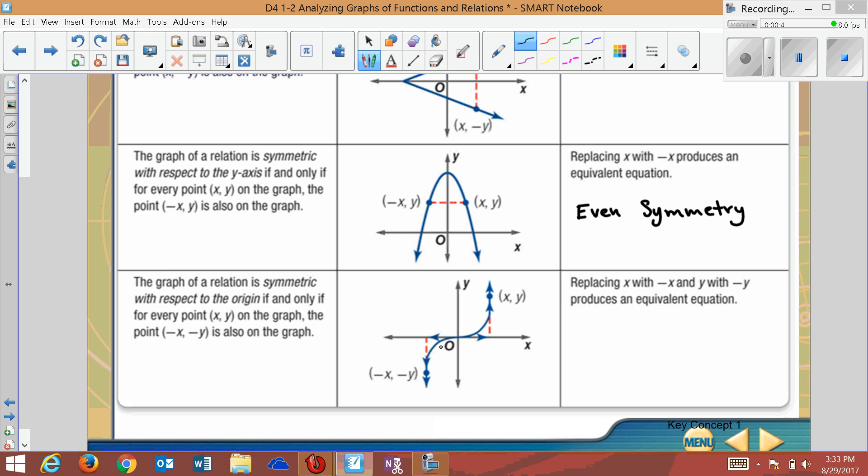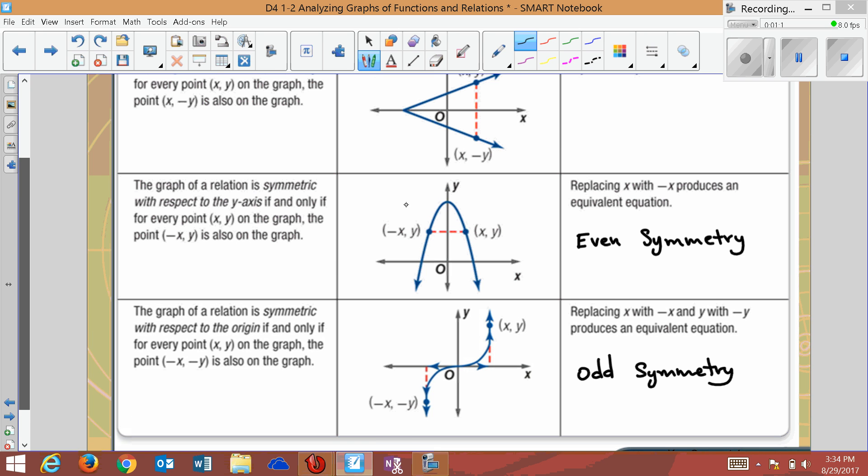Finally, we could have symmetric with the origin. See how this appears to rotate? It's actually reflected twice. It's reflected over the y, then over the x. Or you could go over the x and over the y. This would be odd symmetry here. So we had even symmetry, we had odd symmetry, and this was just over the x-axis symmetry.